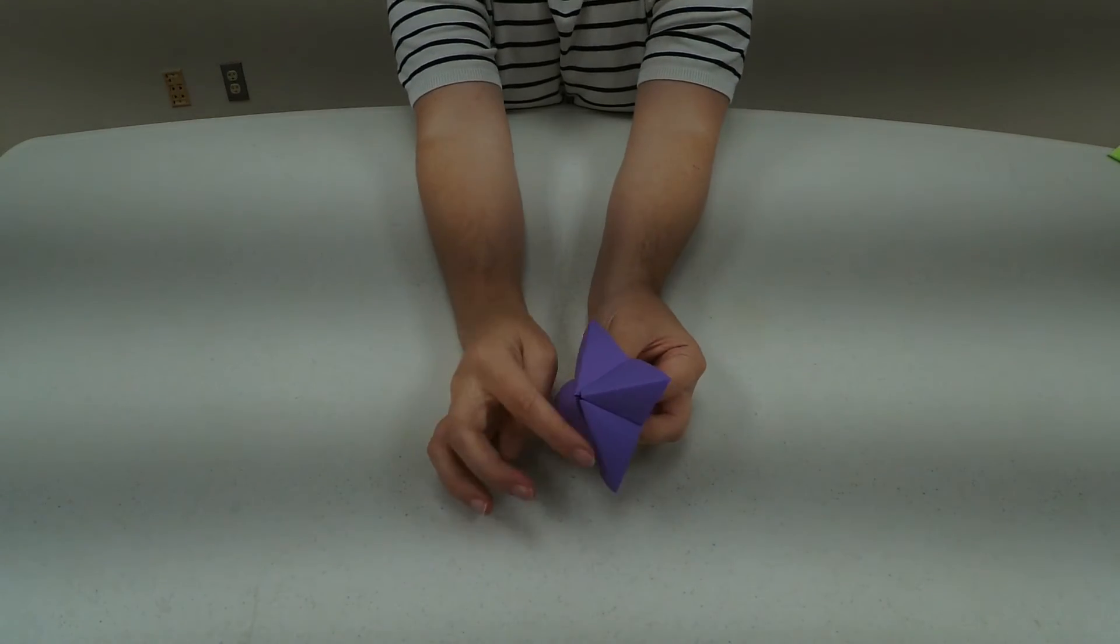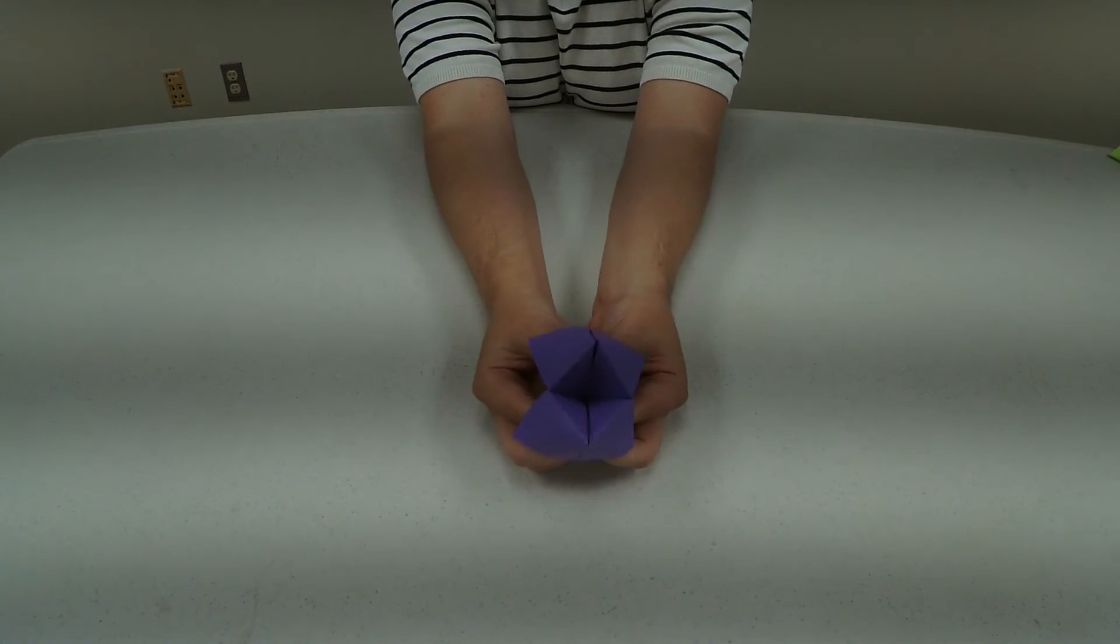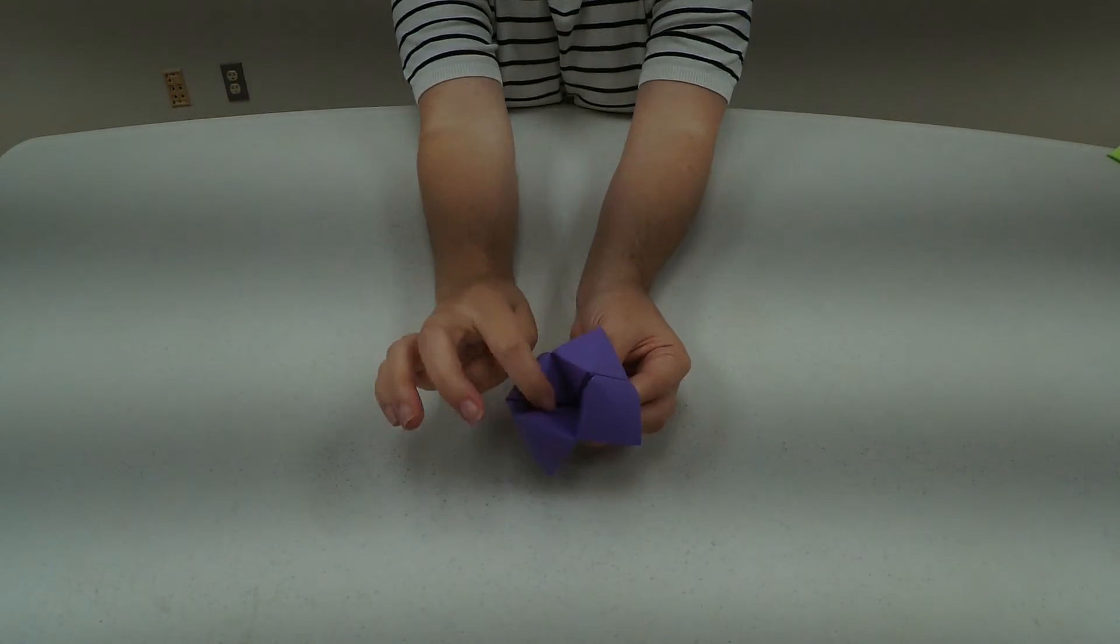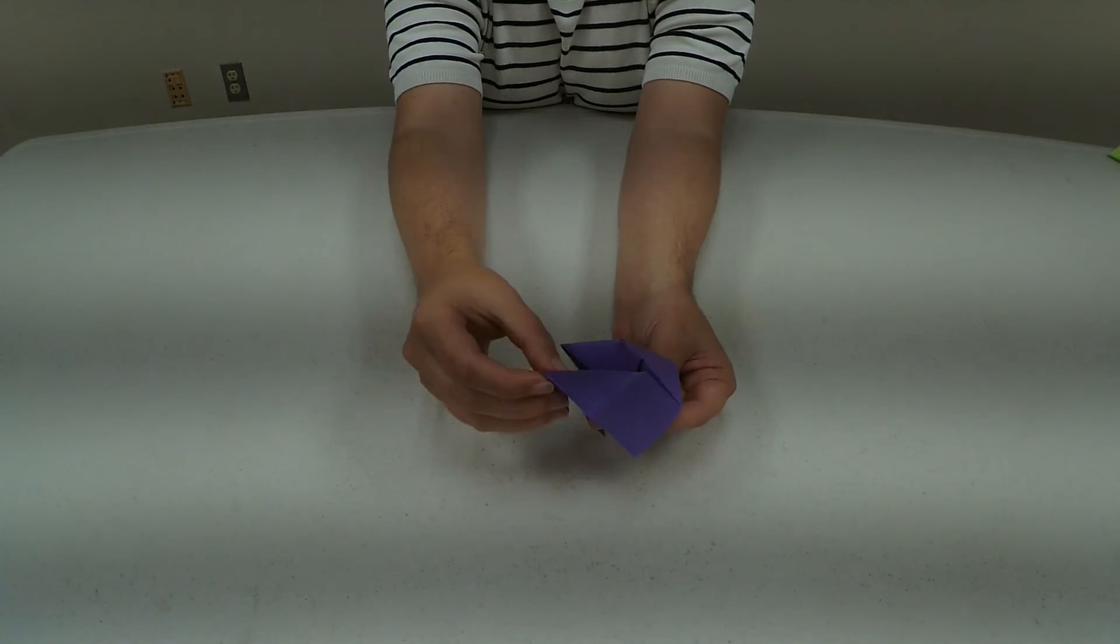What you would usually do is write a number on each of these. You'll count. You'll write something on the inside of these and pick one of these. And then on the inside of the flap will be the fortune.